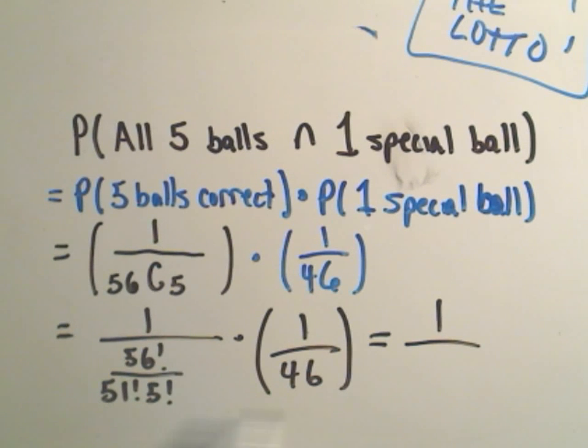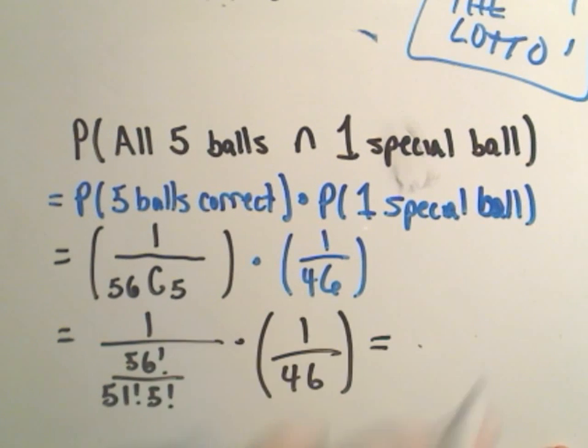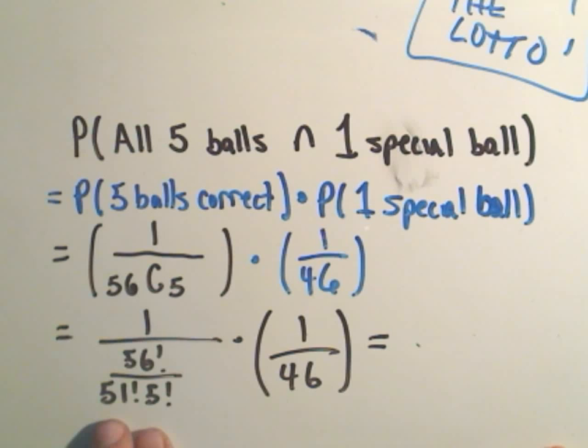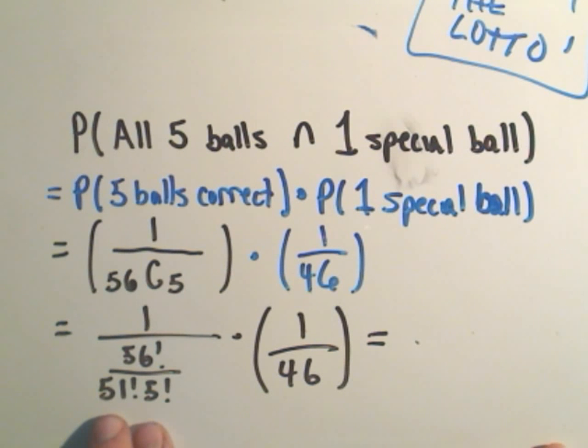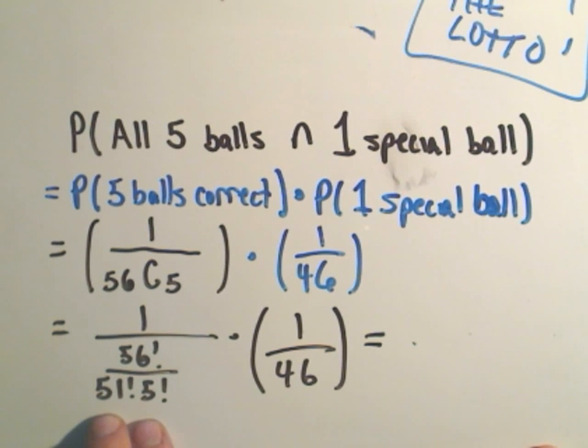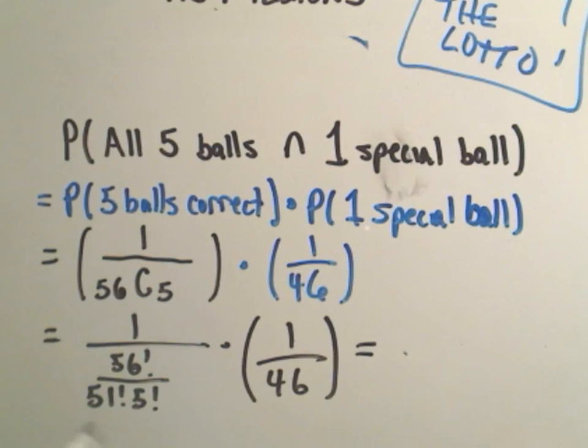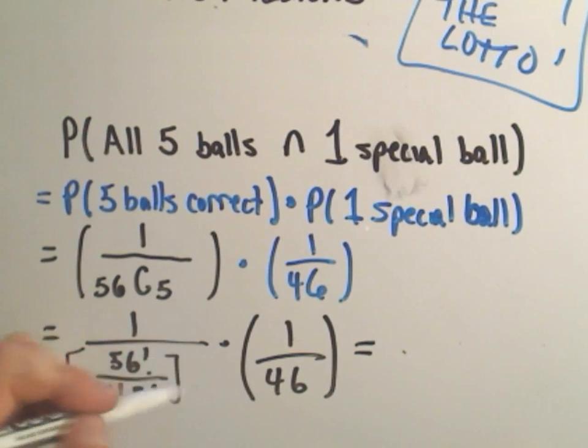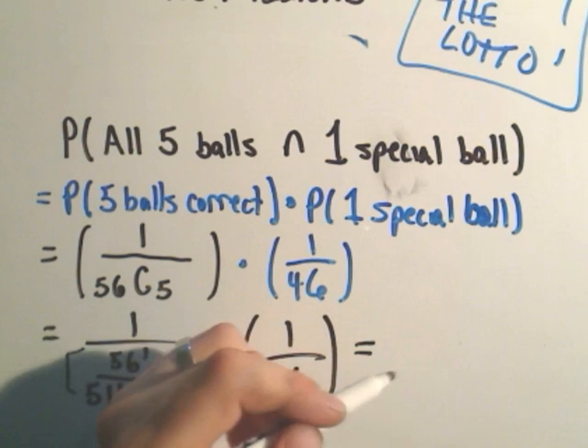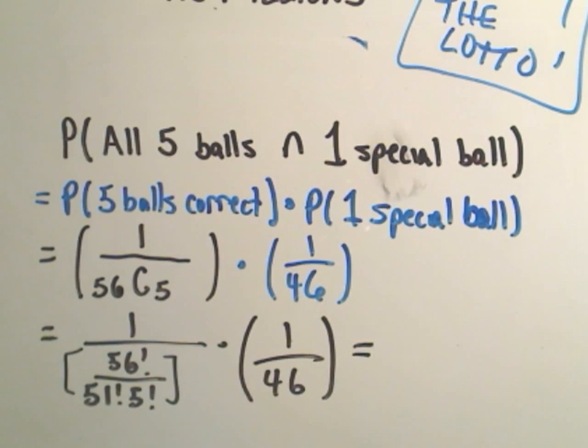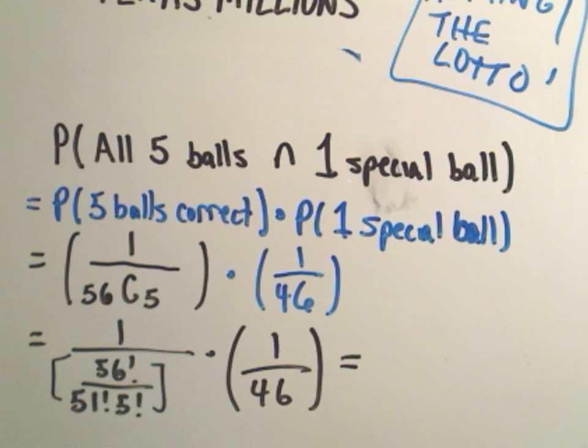I actually just multiplied these two numbers together. I forgot the exact number that I got for 56 factorial over 51 factorial times 5 factorial. It was a pretty big number in the denominator. But if you multiply this number by 46, you actually get the following number as the probability of you winning the lottery.